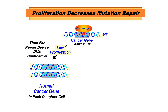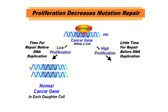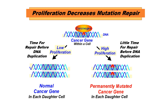On the other hand, if we have cells that rapidly multiply and divide, they are more sensitive to ionizing radiation. With high proliferation, there is little time for repair before the DNA duplicates, and therefore we end up with a mutation. The mutation can be a neoplasm that is either benign or malignant. The malignant mutation is cancer.